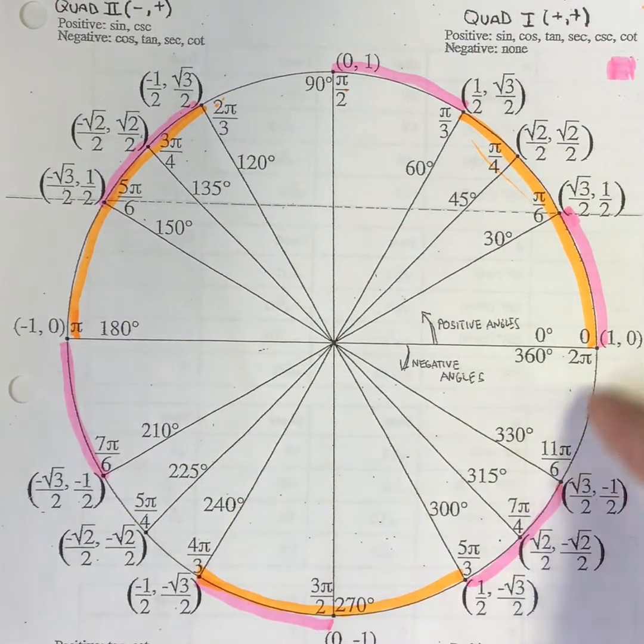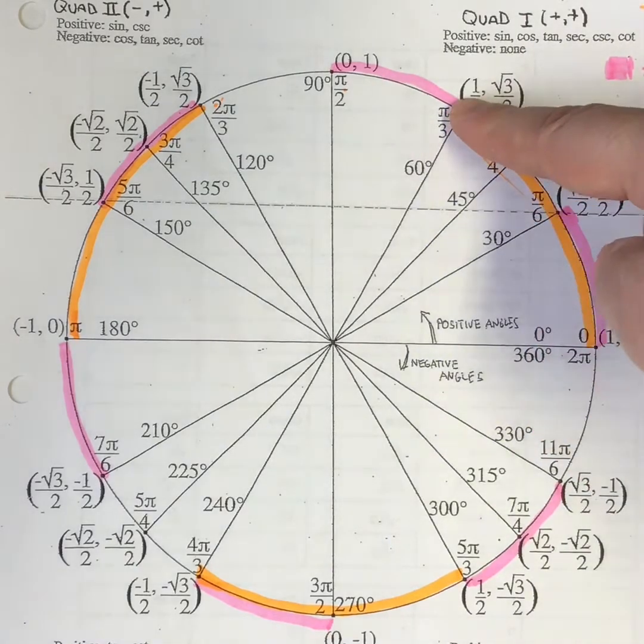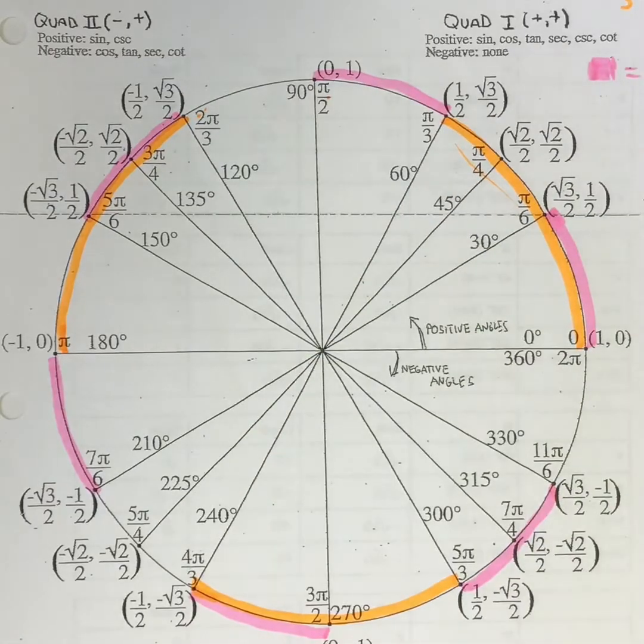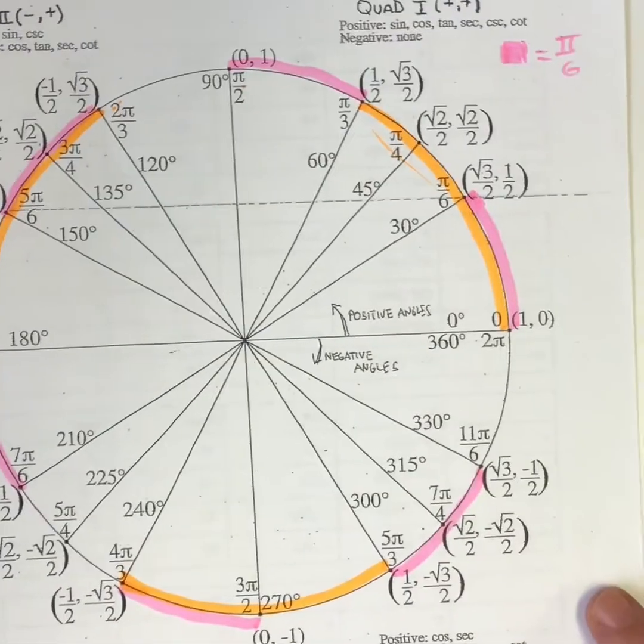ten, eleven, twelve, thirteen, fourteen, fifteen. So, 15 π over 6 would be all right over. Okay. So, there you go.